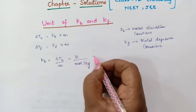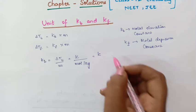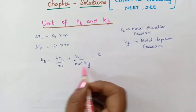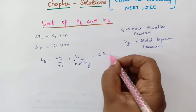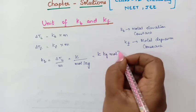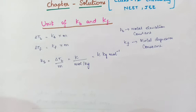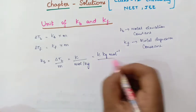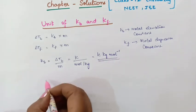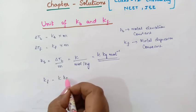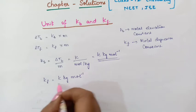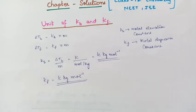So molality will be mol per kg. So this is equal to Kelvin and mol per kg, if you take to the numerator it will become kg per mol minus 1. So this will be the unit for Kb. So even for Kf the unit will be the same, Kelvin kg per mol. So unit for both Kb and Kf will be the same.